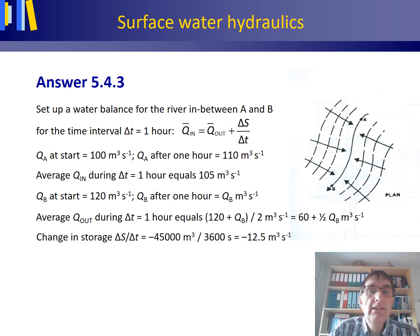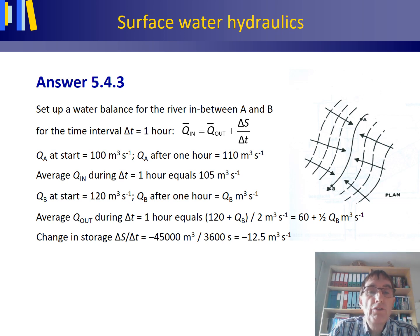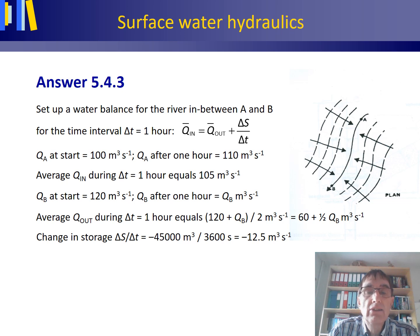The change in storage delta S over delta T is a decrease in storage, and therefore the sign is negative: minus 45,000 cubic meters. Importantly, all variables in the water balance equation need to carry the same unit of measurement — cubic meters per second. So we have to divide minus 45,000 cubic meters by 3,600 seconds, which gives us minus 12.5 cubic meters per second as the change in storage.